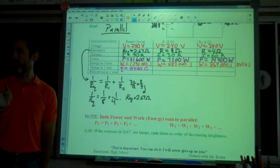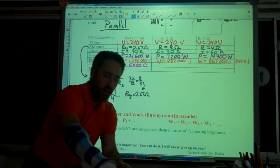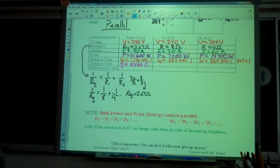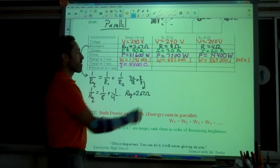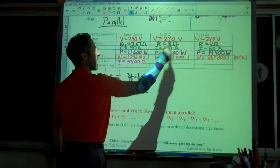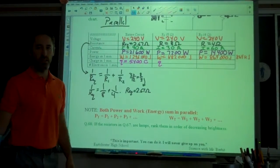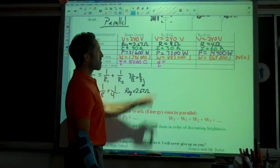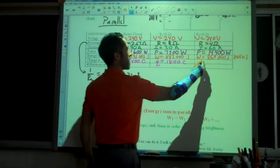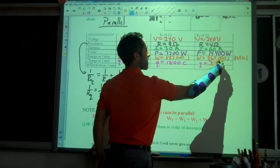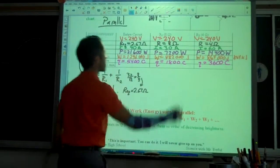Now, current is not the same everywhere in a parallel circuit. Therefore, charge should not be the same everywhere either. In fact, current adds. 30 plus 60 gave you 90. Charge is going to do the same thing. So I times T. 30 times 60. 1,800 coulombs. And 60 times 60. 3,600 coulombs.